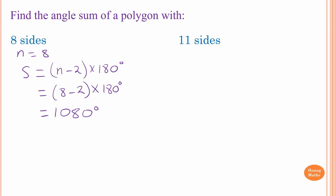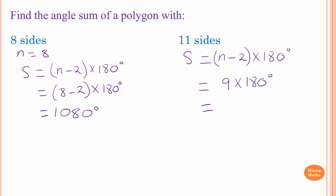Please stop the video and try this one yourself. The rule is S = (n − 2) × 180 degrees, which is 11 − 2 = 9, then times 180, which equals 1620 degrees.